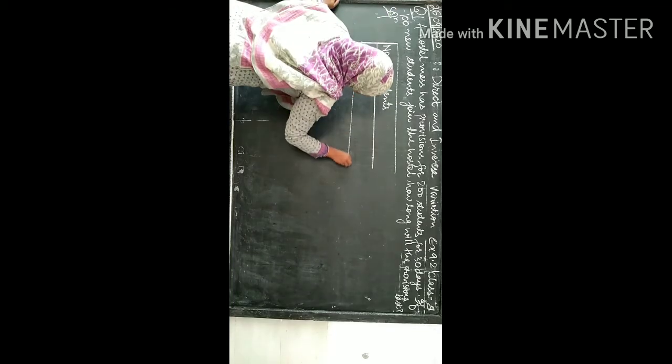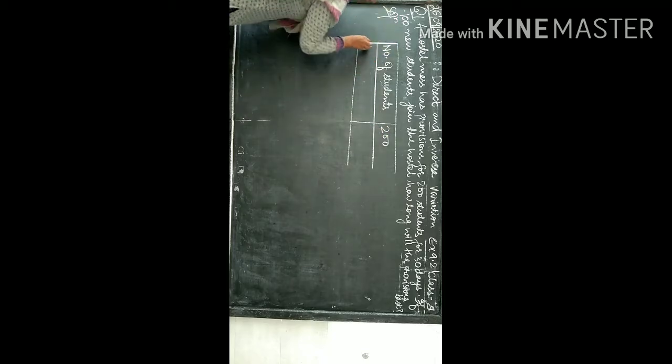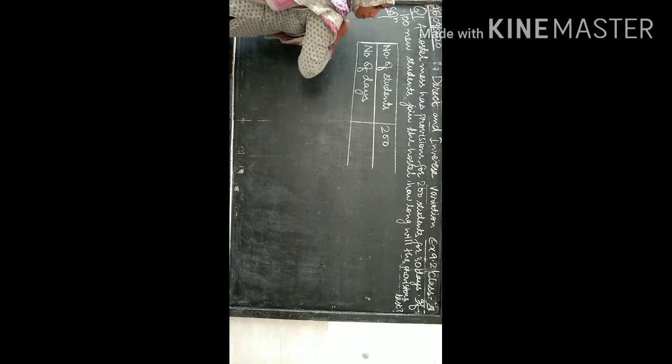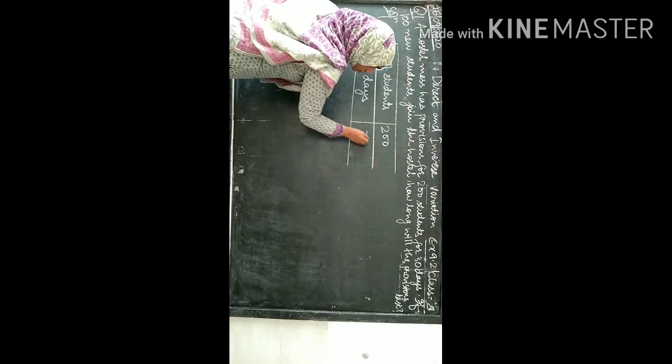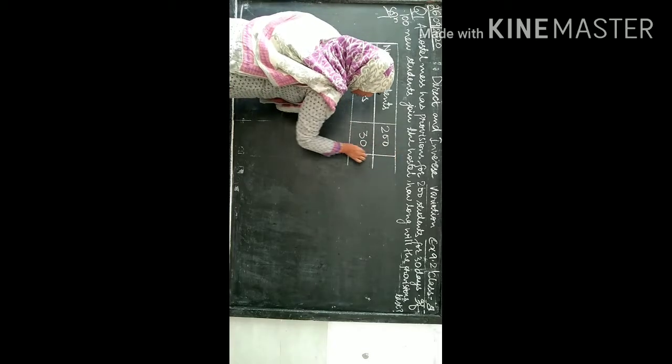And for 200 students, how many days? Number of days: for 30 days. For 200 students, 30 days provision.